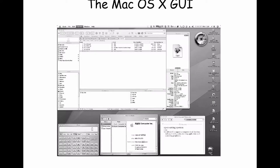This is the Mac OS X GUI — the usual windows, icons, menus, and pointers. You click, drag, type names, and so forth. It presents a nice graphical accessible interface on top of what underlies it, which is a variant of BSD — Berkeley Systems Division Unix. You can absolutely program it from the command line or using what's called the POSIX interface, which we'll talk about in a few slides.